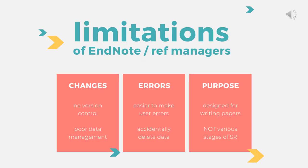While these features are great, there are also limitations of using reference manager software in systematic reviews. Firstly, software such as EndNote does not allow version control, so it can be hard to see and keep track of your records from your initial search down to your included studies. Workarounds can include having separate files for all of your retrieved references, your unique references and your included references, or splitting these up into groups in one single file, but these can be hard to keep track of.